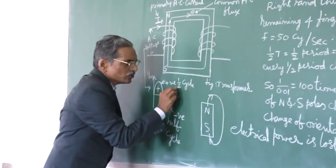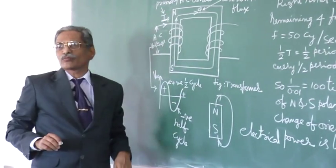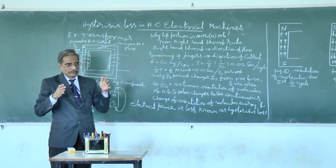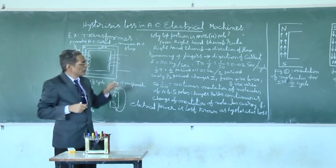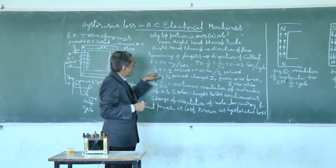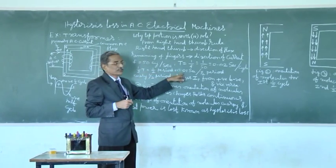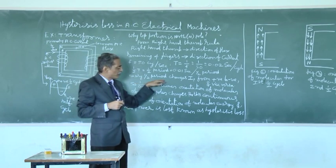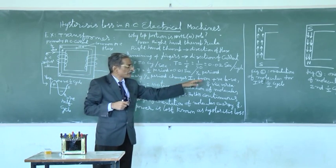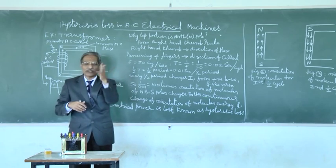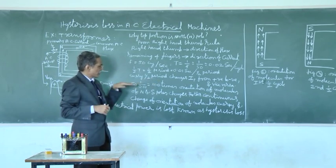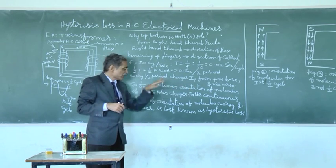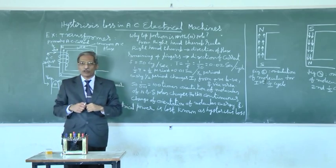Again, afterwards it goes to positive means how many half cycles we are getting changed. So, this is changing for a particular second. If you want to calculate, you take half T, half period. Half period is 0.01 seconds. For every half period changes polarity from positive to negative. Again, negative to positive. Vice versa. So, 1 by 0.01 means hundred times. Orientation of molecules of north and south poles.